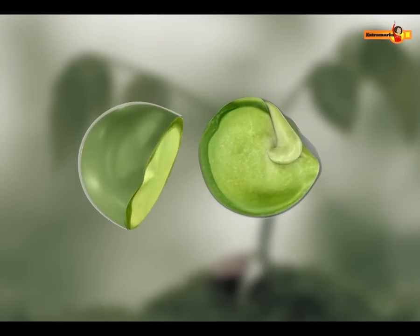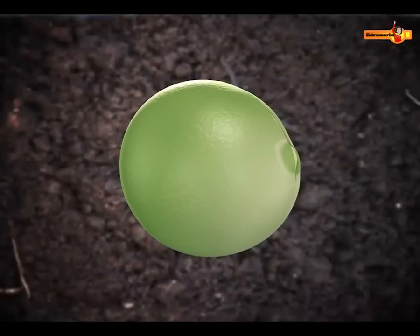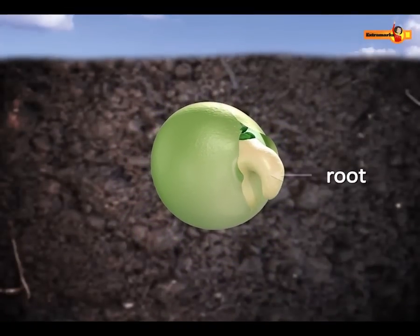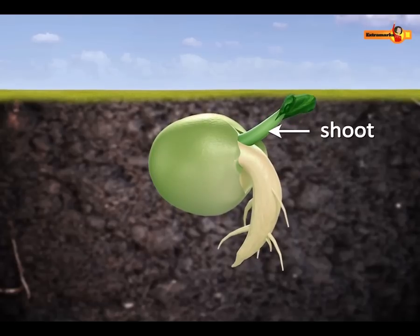Inside the seed coat, the developing embryo lives on the food stored in the cotyledons. First the root appears, and later the shoot.